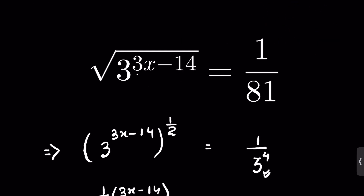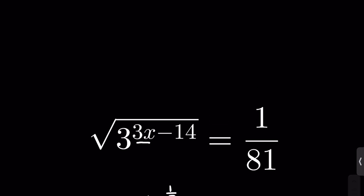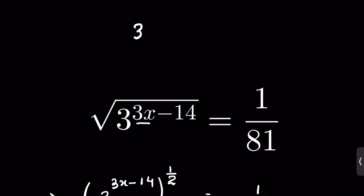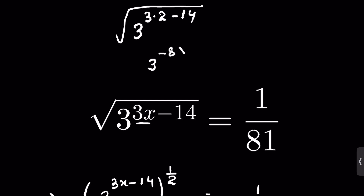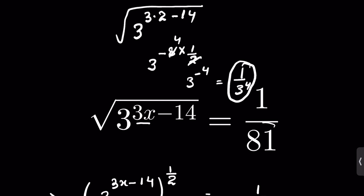Let's verify: with x equals 2, we get 3 raised to the power (3 times 2 minus 14) under square root, which is 6 minus 14 equals minus 8, so 3 raised to the power minus 8 times 1/2 equals 3 raised to the power minus 4. This equals 1 upon 3 raised to the power 4, so LHS equals RHS. Hence our answer is verified.